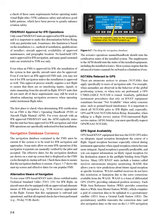This approval process usually requires a test flight to ensure that there are no interfering inputs, signals, or static emanating from the aircraft in flight. RNAV units that do not meet all of these requirements may still be used as situation-enhancing navigation resources when operating under instrument flight rules. The first place to check when determining IFR certification for an FMS is the pilot's operating handbook (POH) or aircraft flight manual (AFM). For every aircraft with an IFR-approved FMS/RNAV unit, the AFM explicitly states that the unit has been approved for IFR navigation, and what IFR operations are specifically authorized for that installation.